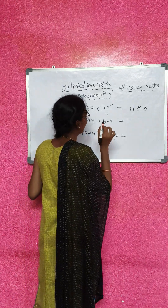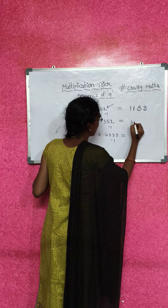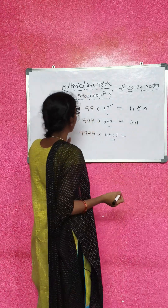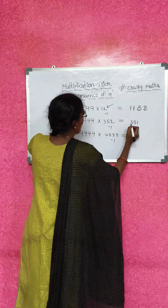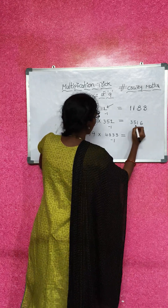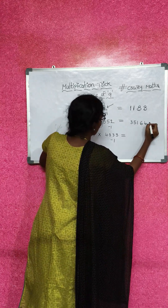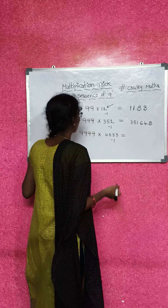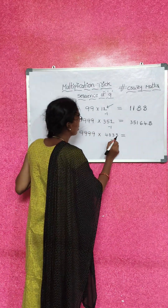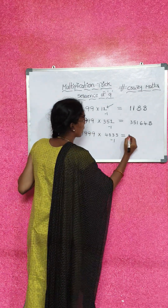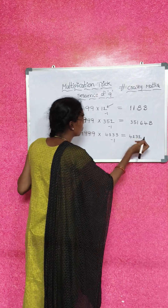The second number is 352. So for 352, the result here is 4233 minus 1, giving us 4232.